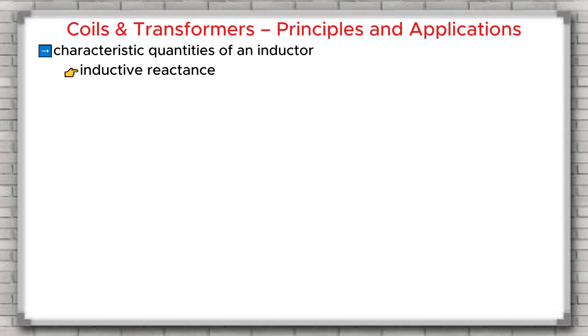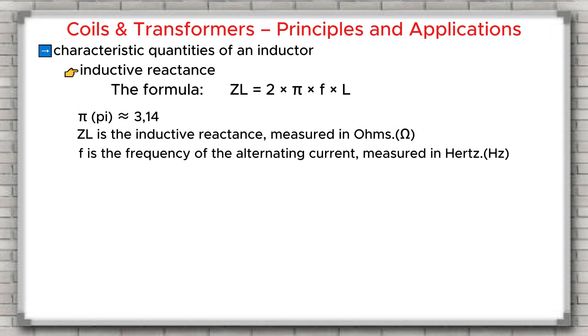The second characteristic quantity is the inductive reactance. Inductive reactance of a coil is the quantity that shows how the coil opposes the current when an alternating current flows through it. Important note: with direct current or DC, the coil only has its natural resistance. It has no inductive reactance. With alternating current or AC, when the current is continuously changing, the coil generates a self-induced electromotive force that opposes this change. This opposition is called inductive reactance. The formula for inductive reactance is ZL equals 2 multiplied by π multiplied by F multiplied by L, where π is approximately 3.14. ZL is the inductive reactance measured in ohms.